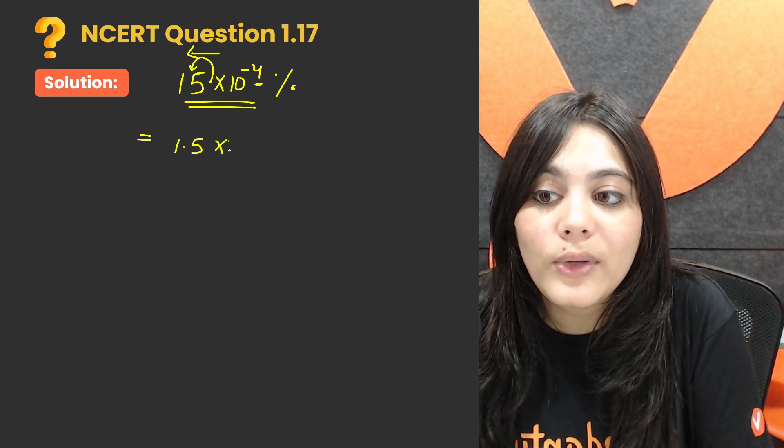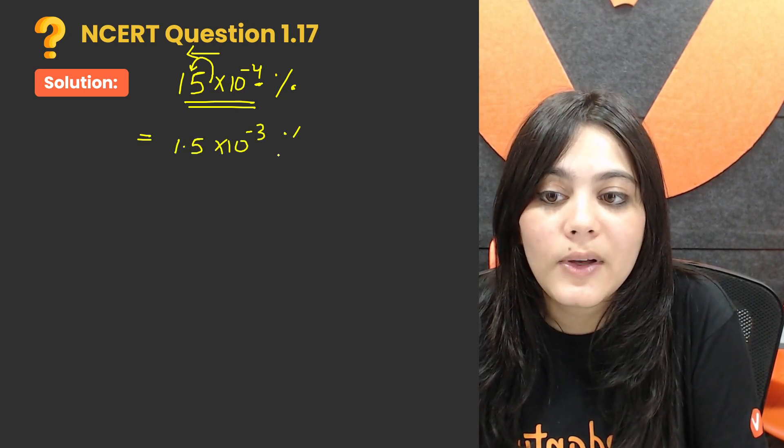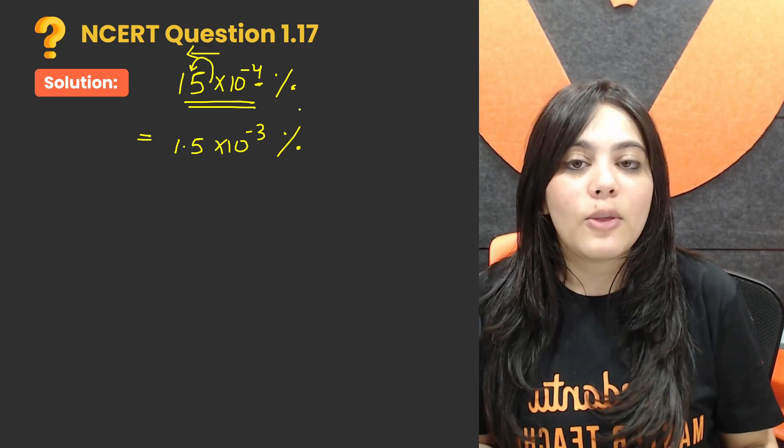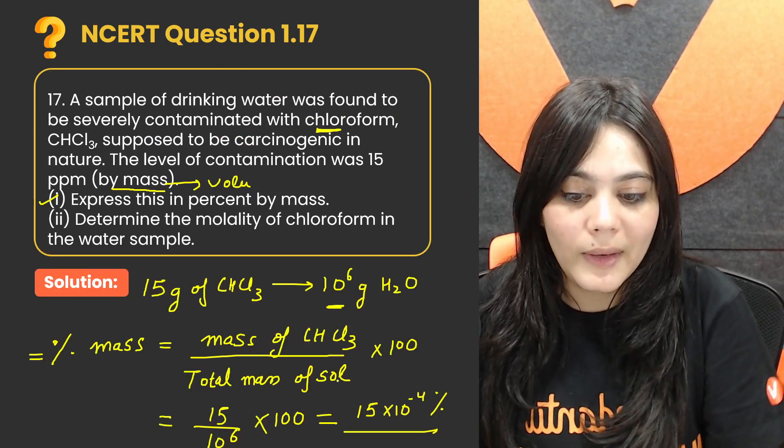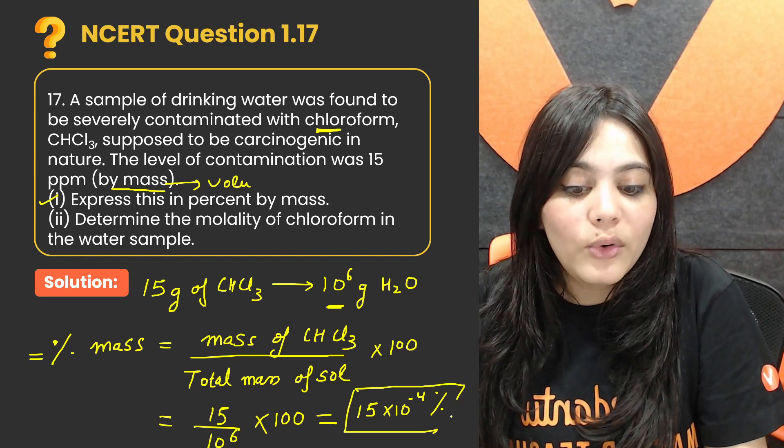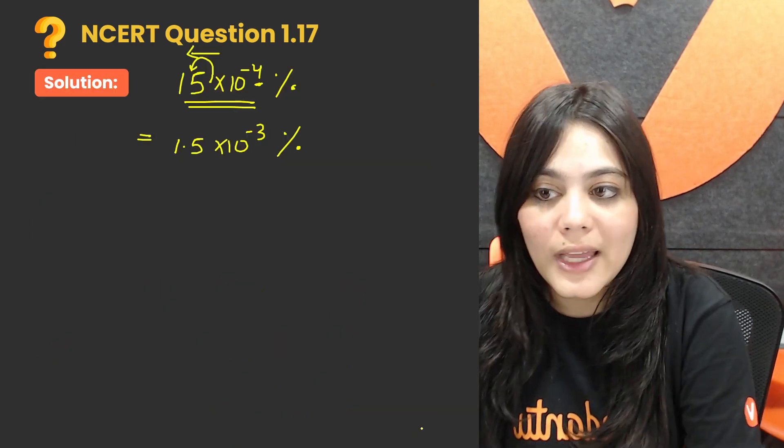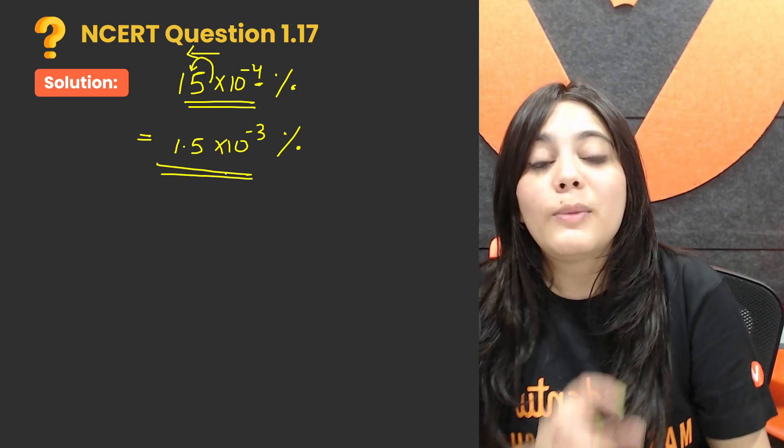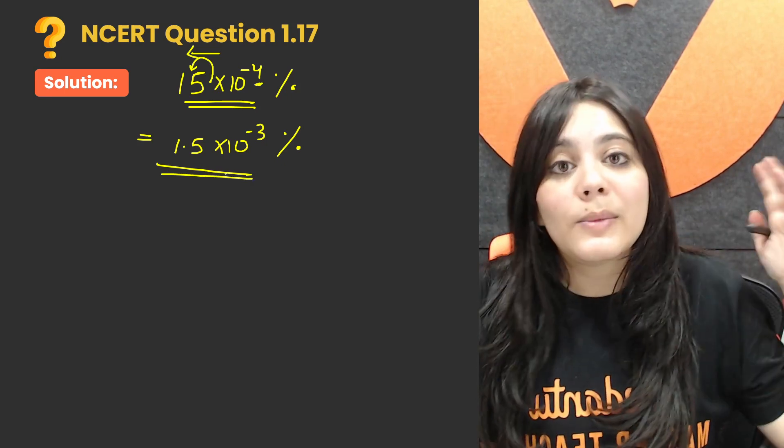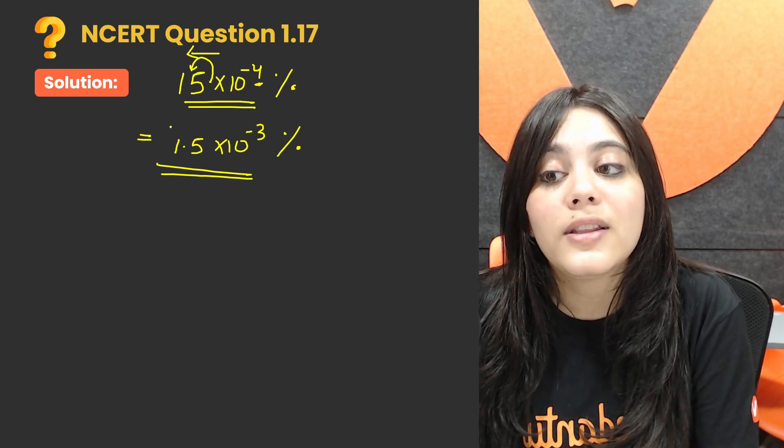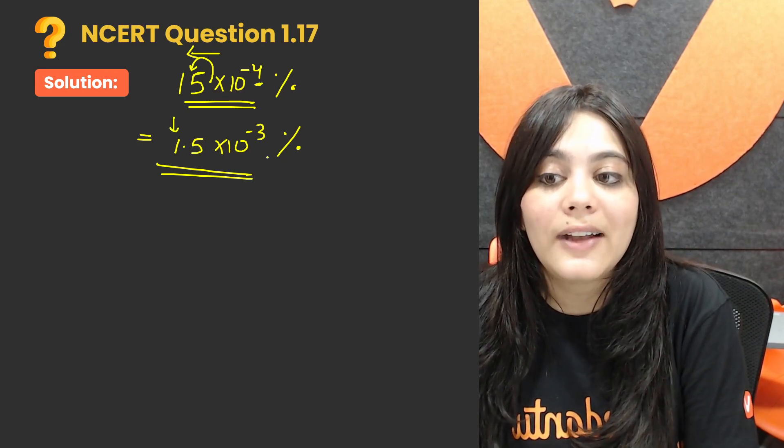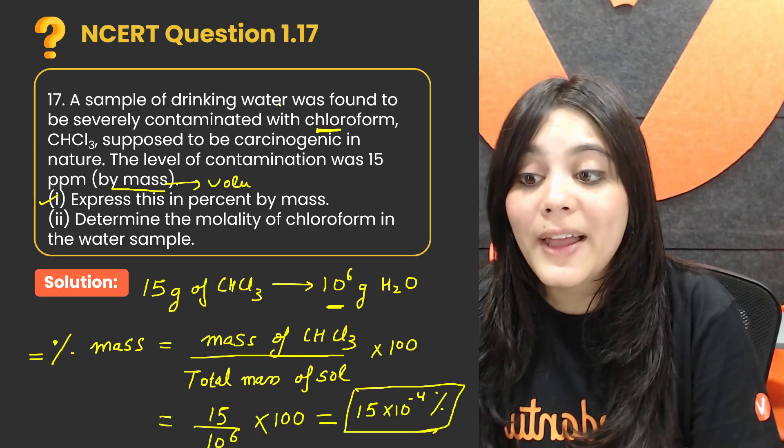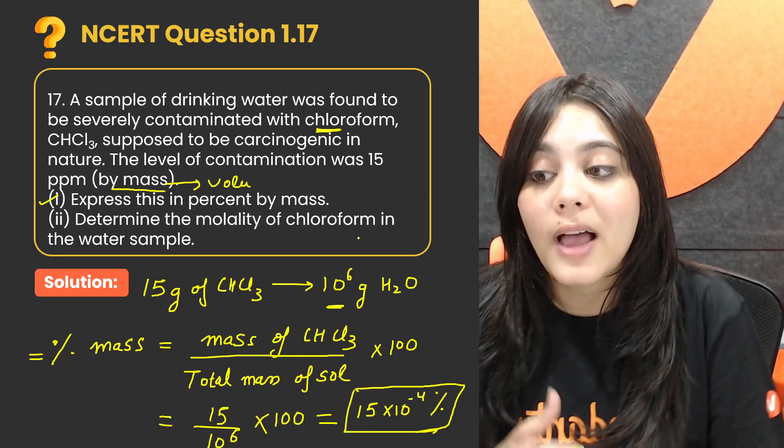So 1.5 into 10 raised to the power of minus 3 percent will be the answer. Even though 15 into 10 raised to the power of minus 4, which we have left here, is correct. But to write it in better scientific notation, we use this scientific notation in which the first digit after the decimal point is a non-zero digit, one single digit here.